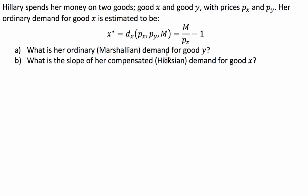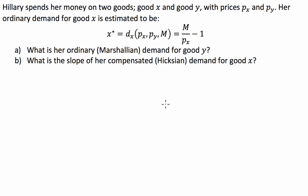And what is the slope of her compensated Hicksian demand for good X? Notice how we haven't been given a utility function for this question. We don't precisely need one because we know that ordinary demand, or the optimum demand, is when an indifference curve is tangent with our budget constraint — so the marginal rate of substitution equals the indifference curve or utility function. What we can do is use the budget constraint to find the associated demand for good Y.